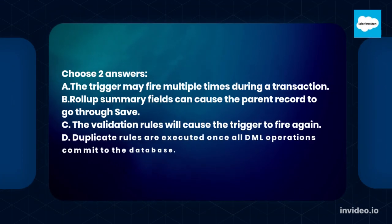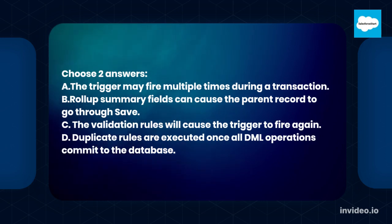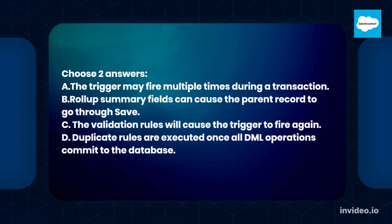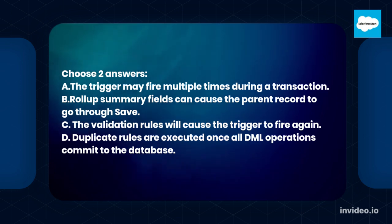A. The trigger may fire multiple times during a transaction. B. Roll-up summary fields can cause the parent record to go through save. C. The validation rules will cause the trigger to fire again. D. Duplicate rules are executed once all DML operations commit to the database.